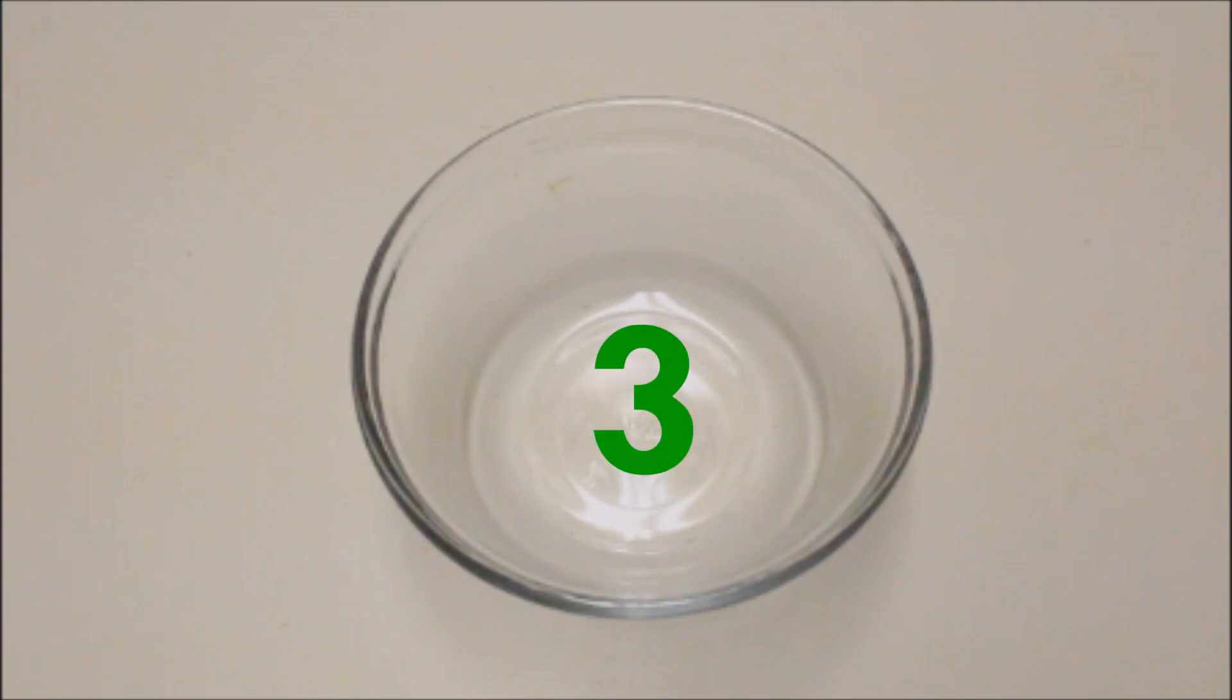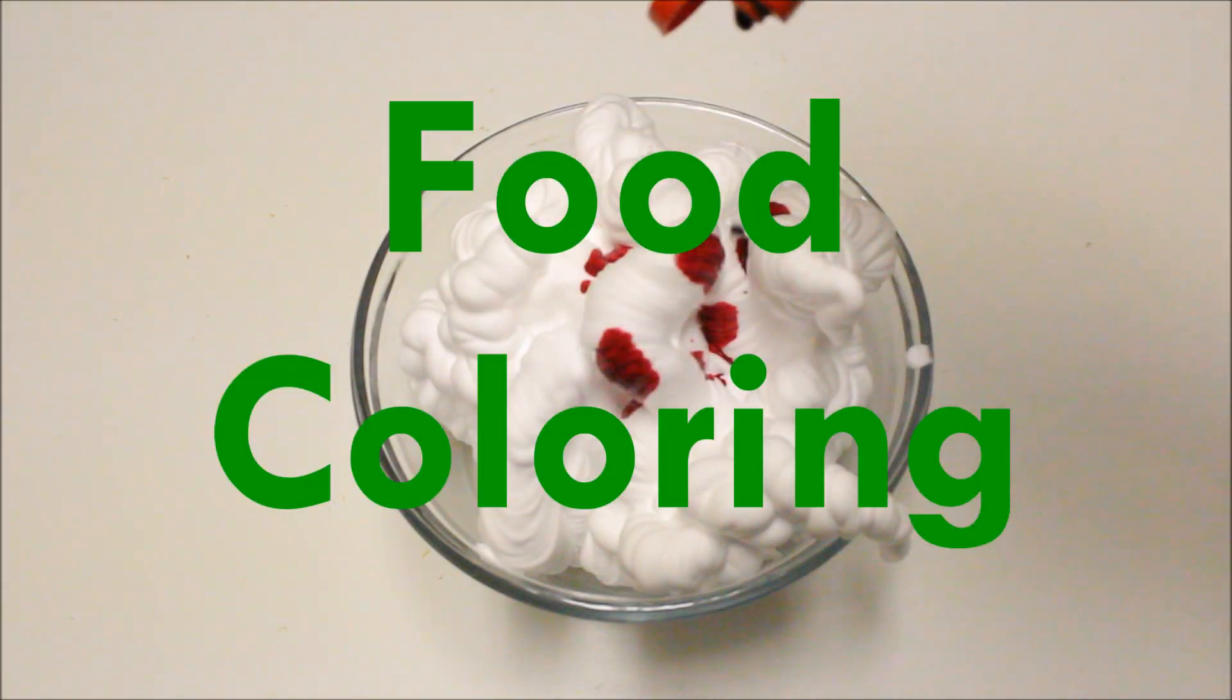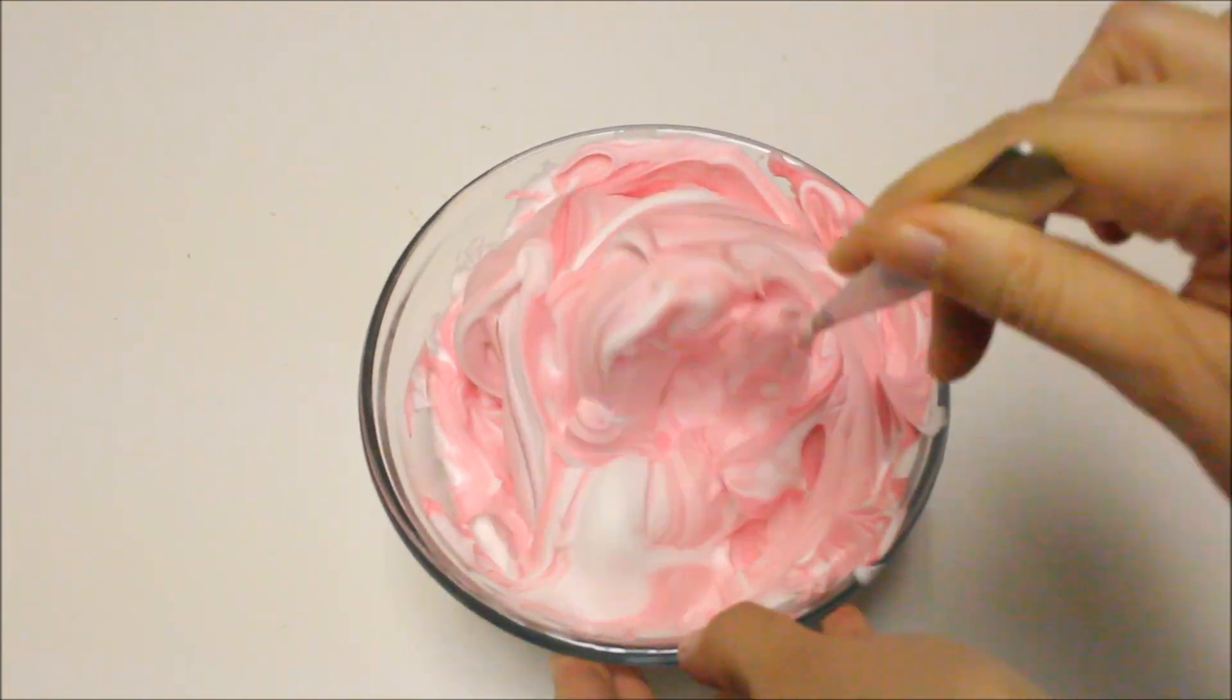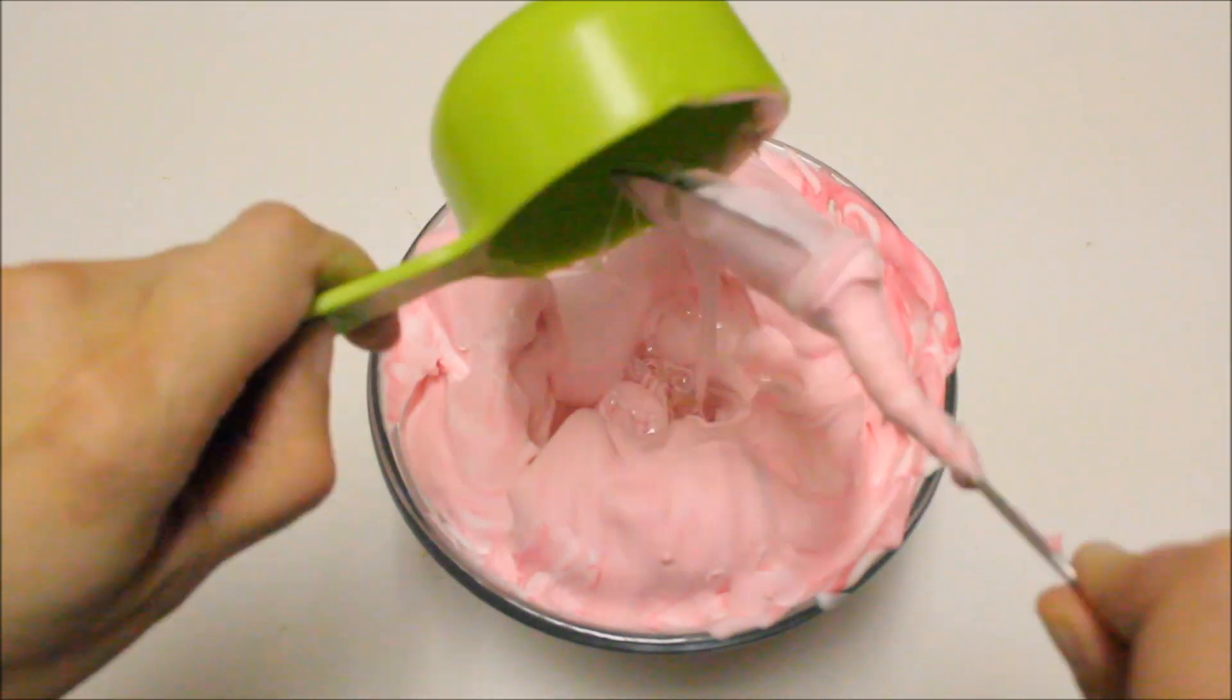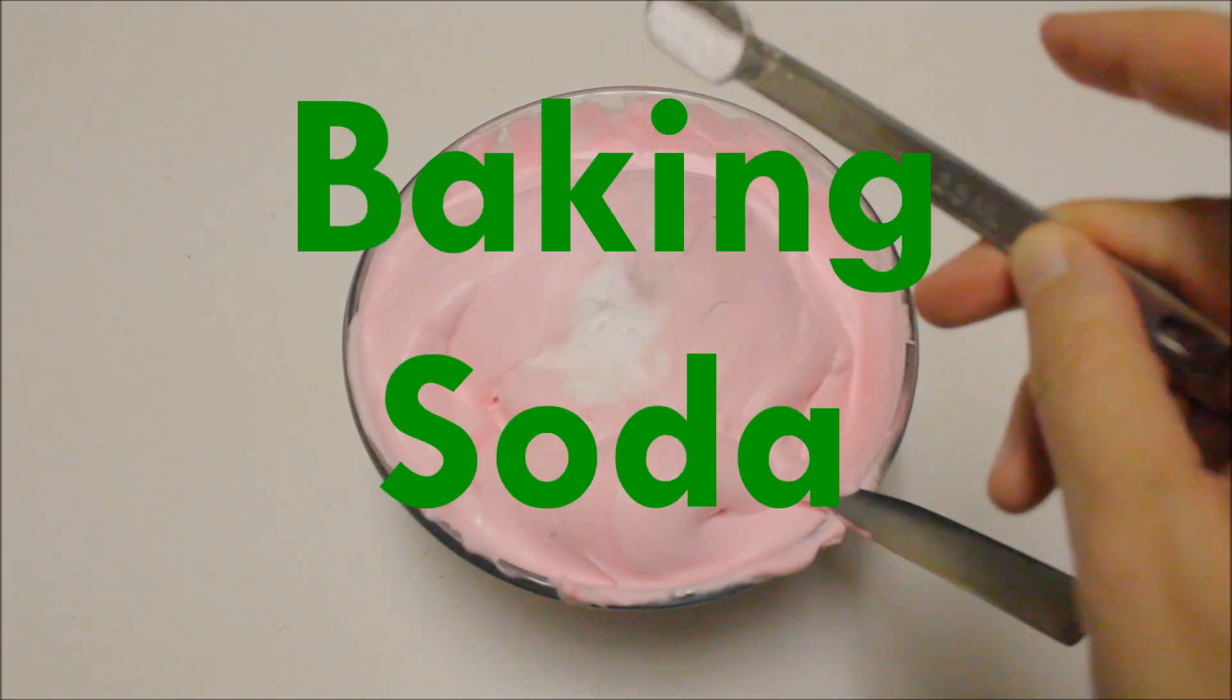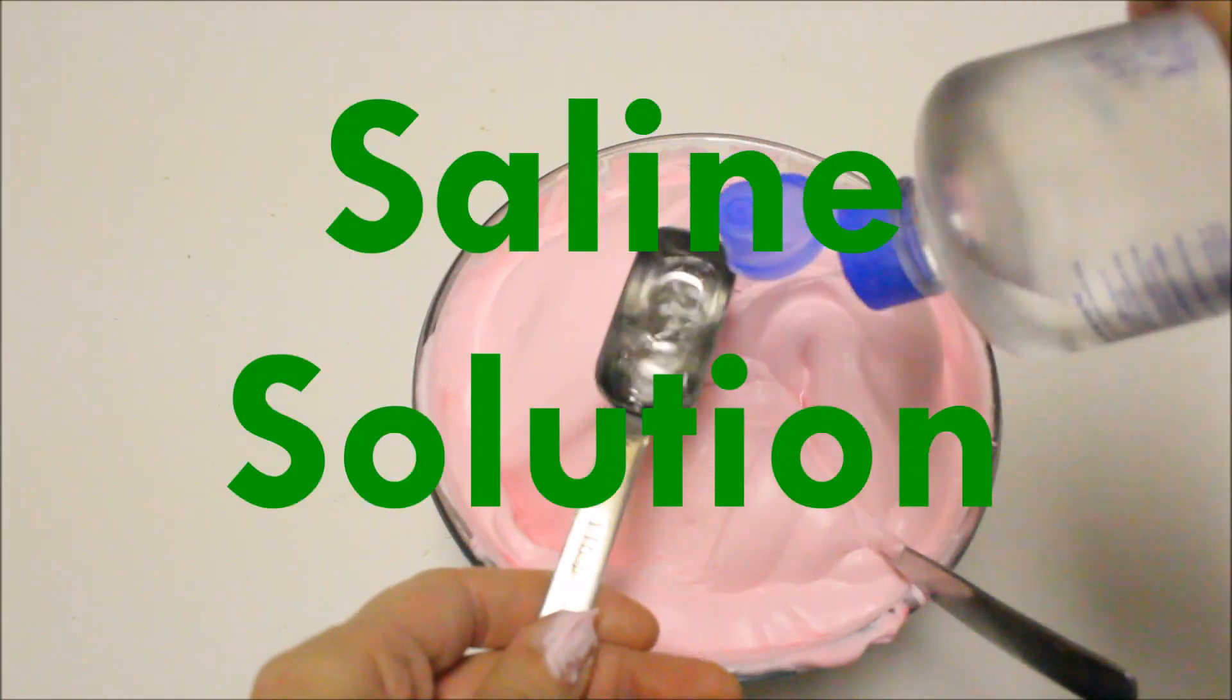For the third type of slime, we need some shaving cream, food coloring, clear glue, baking soda, and some saline solution.